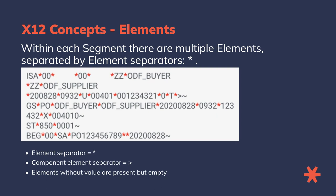Elements are like individual pieces of data, such as a name or a date. They give specific details related to the segment's topic. You will also sometimes see component element separators — the greater-than symbol — which can be used within elements to separate sections of the element. Elements without a value are still present but empty, and appear as just two element separators with nothing between them.